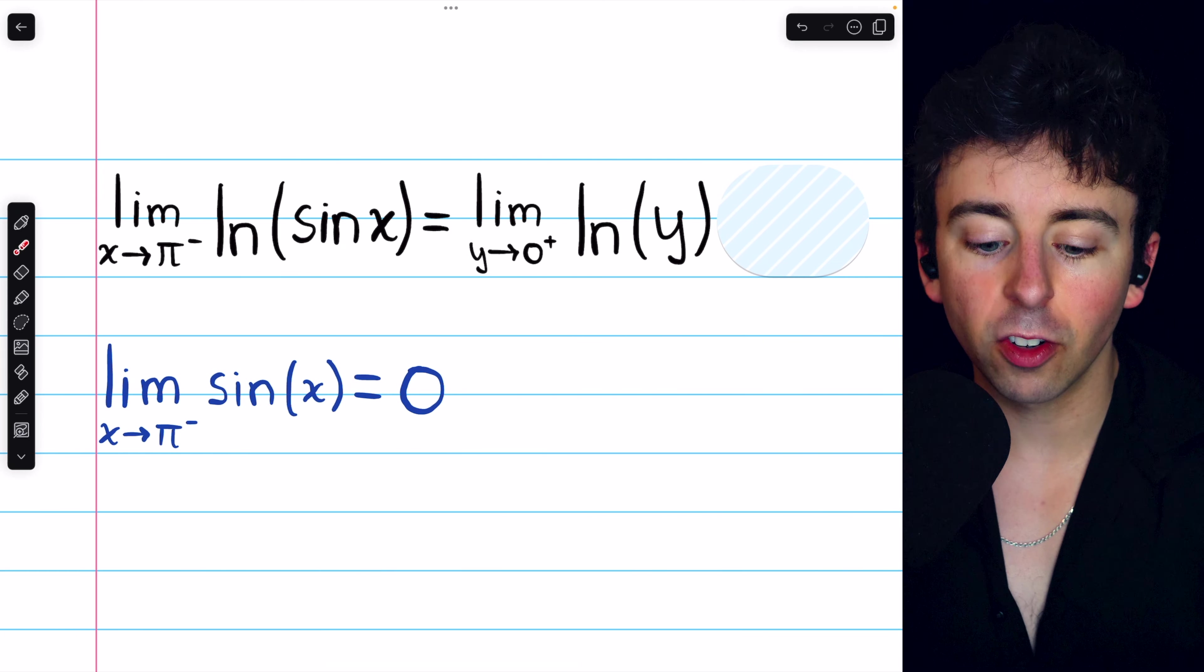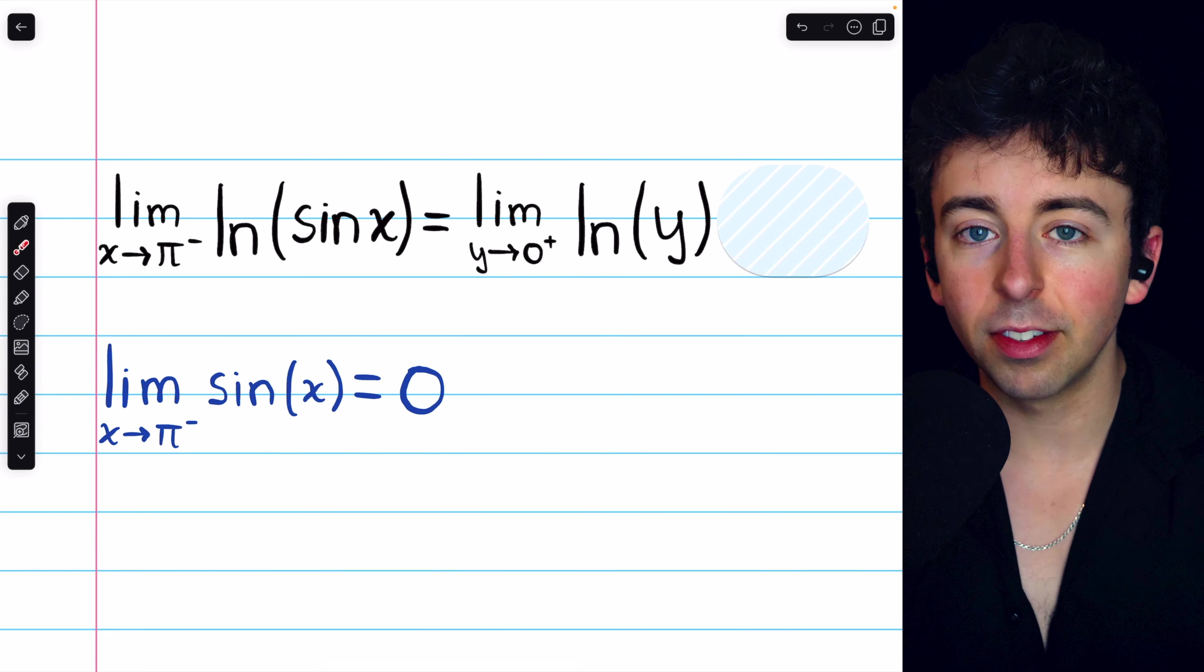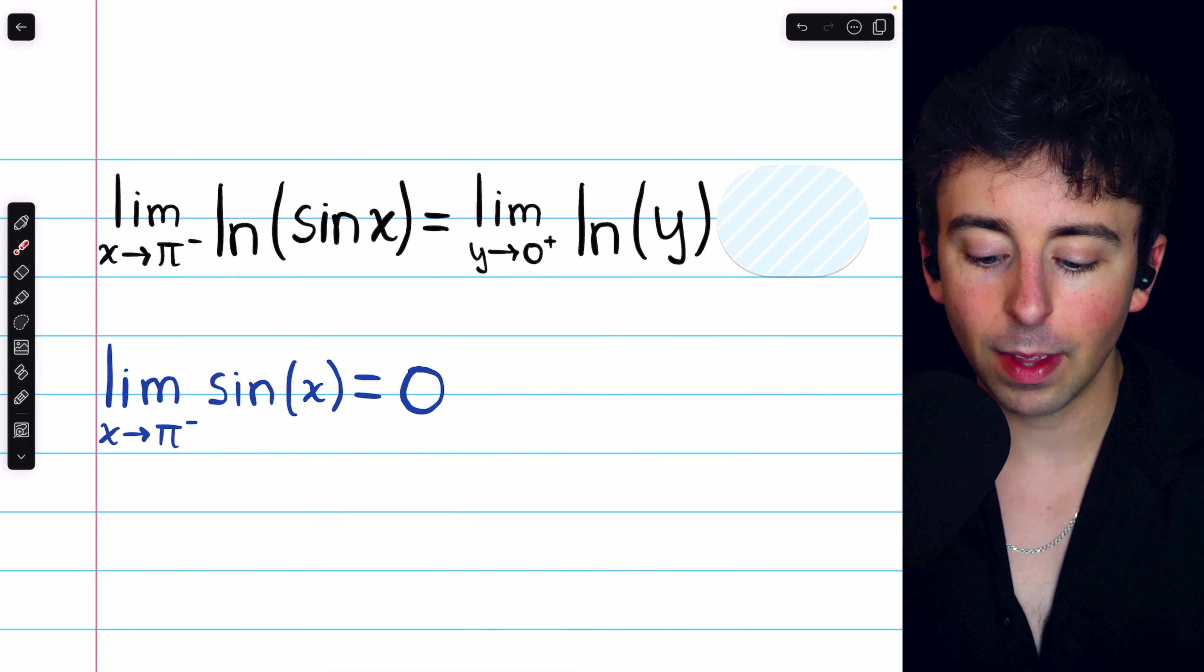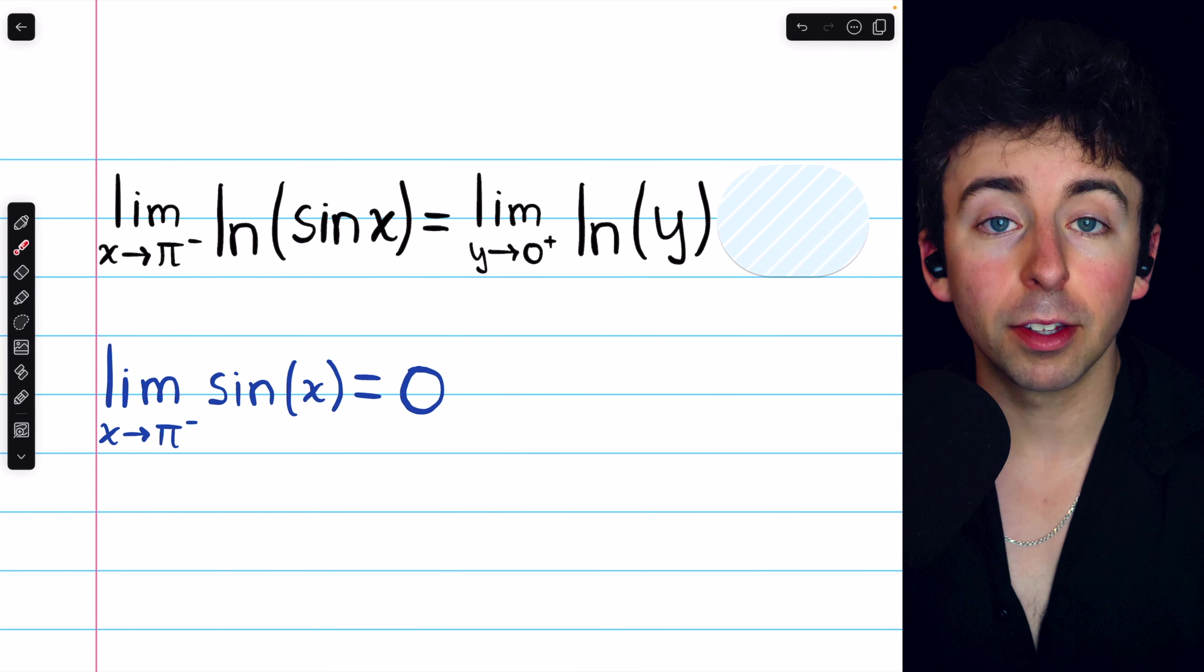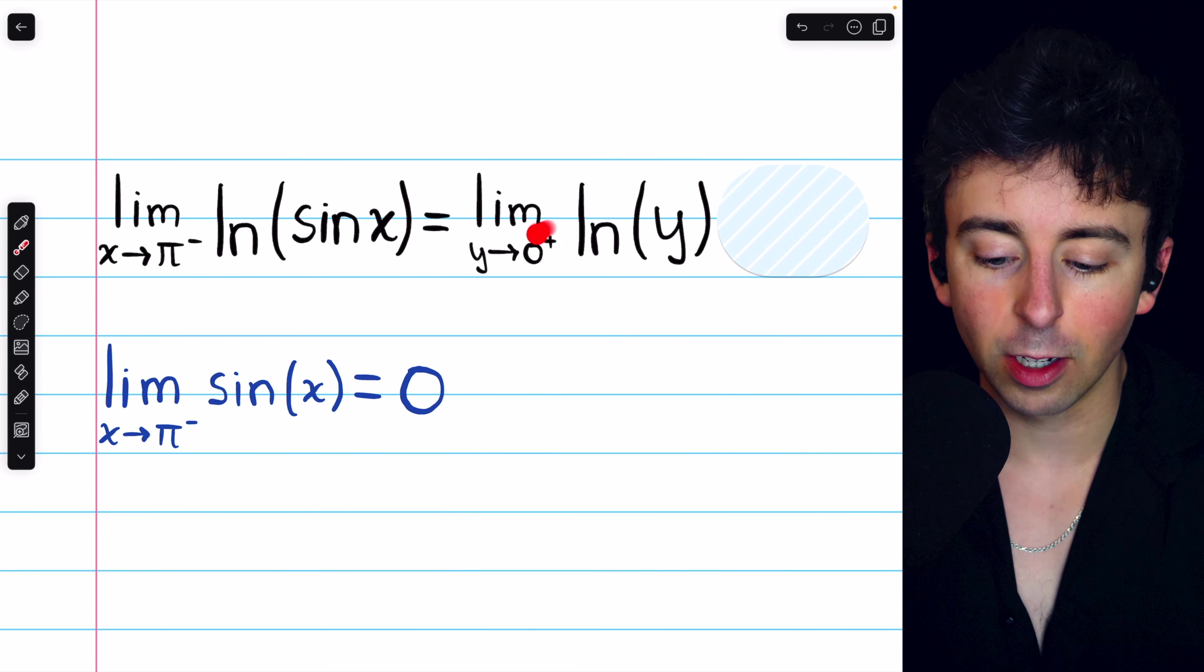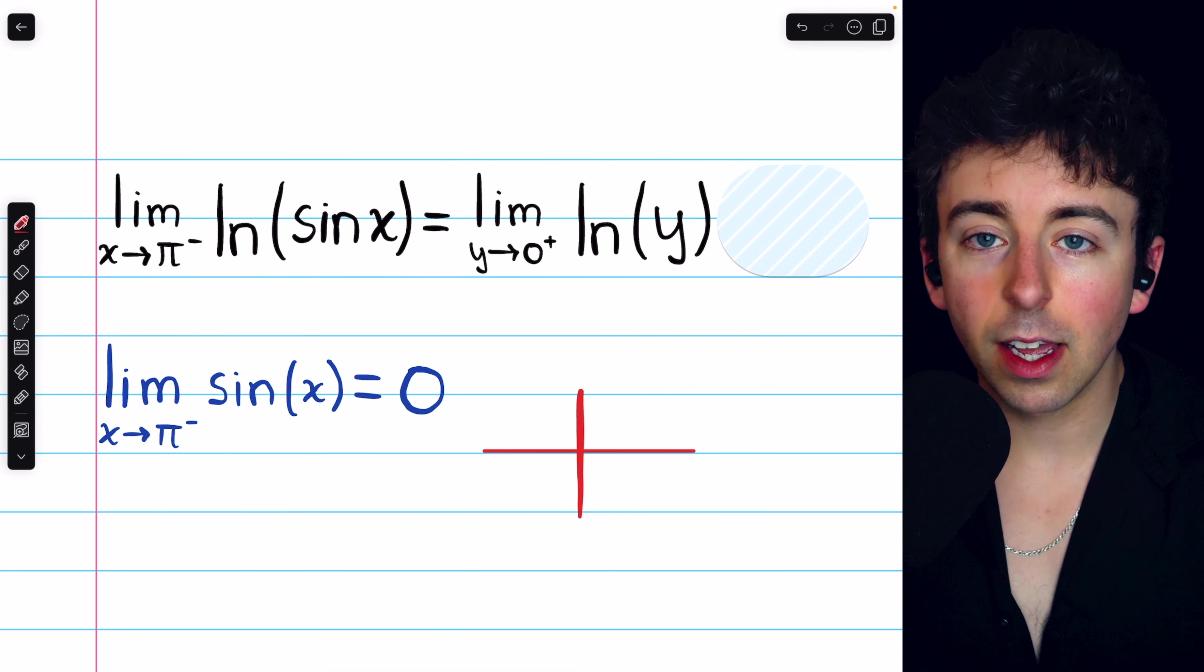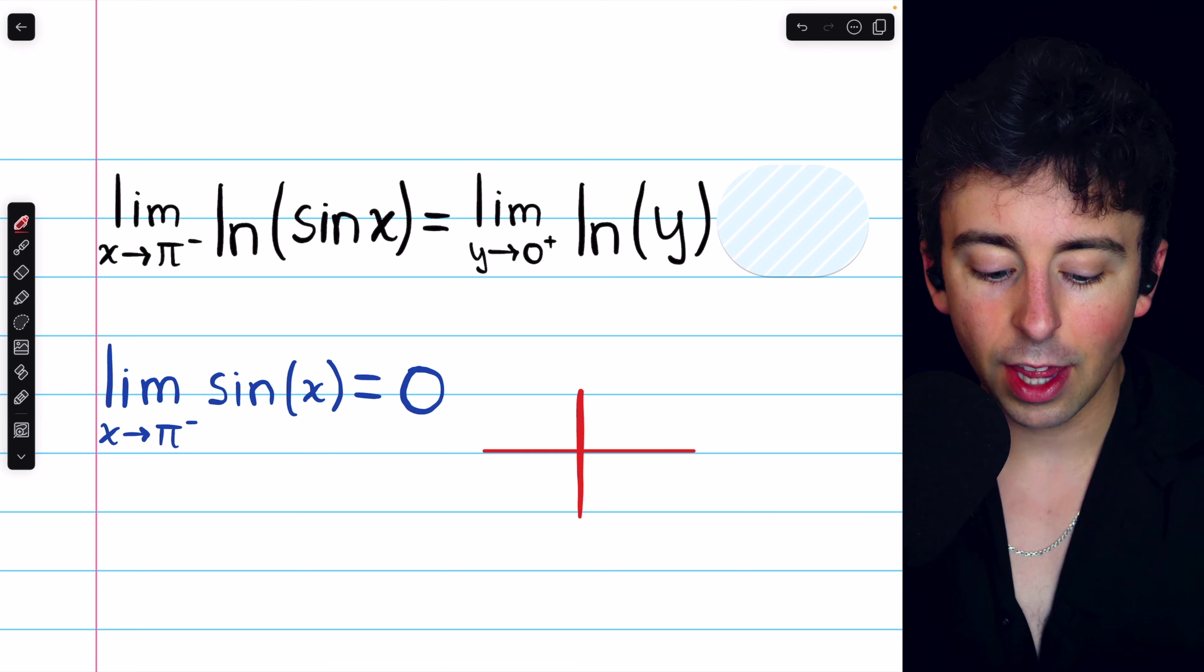But this does allow us to rewrite this limit without the sine function. We know that the inside of the natural log, as x is approaching pi from the left, is just approaching zero. So we could rewrite it as the limit of the natural log of y as y approaches zero, but specifically y is approaching zero from the right.